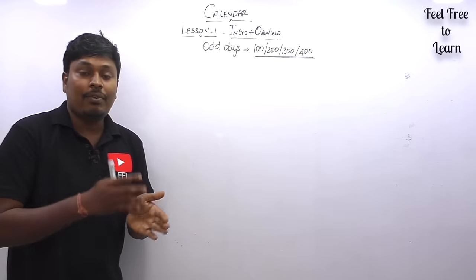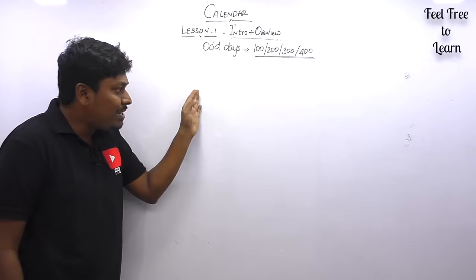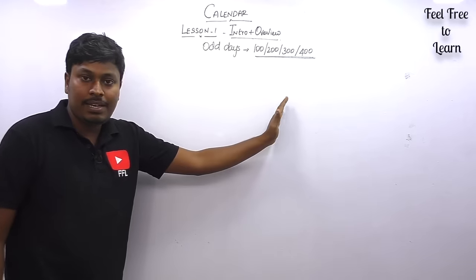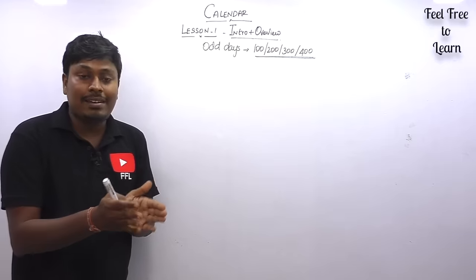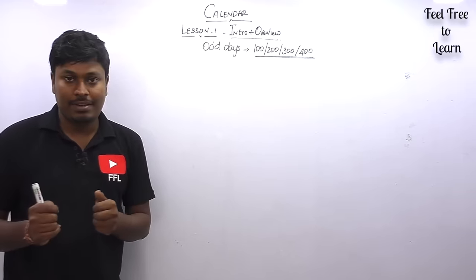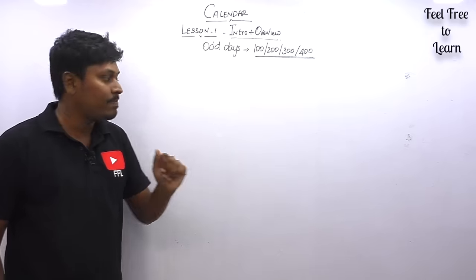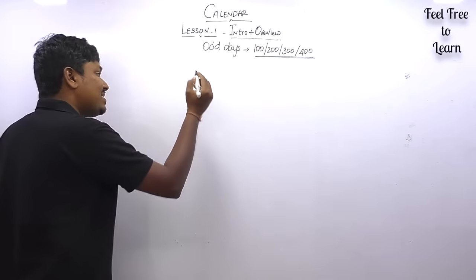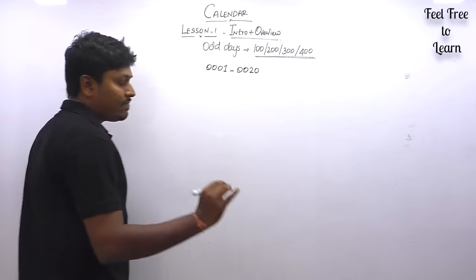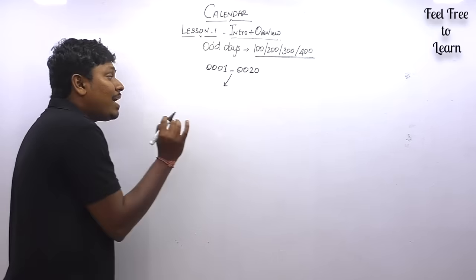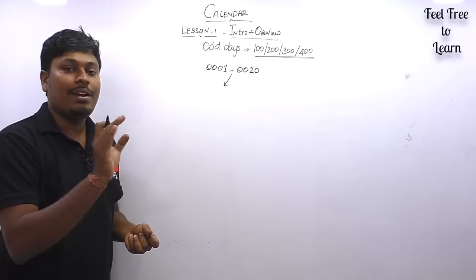Now we can find how many odd days we have for a span of years — for example, for the first 20 years. Previously we found odd days for given number of days; now we do it for years. For the first 20 years: first determine how many leap years and how many ordinary years there are. Leap years are multiples of 4, so from year 1 to 20: 4, 8, 12, 16, 20 — that's 5 leap years, and the remaining 15 are ordinary years.